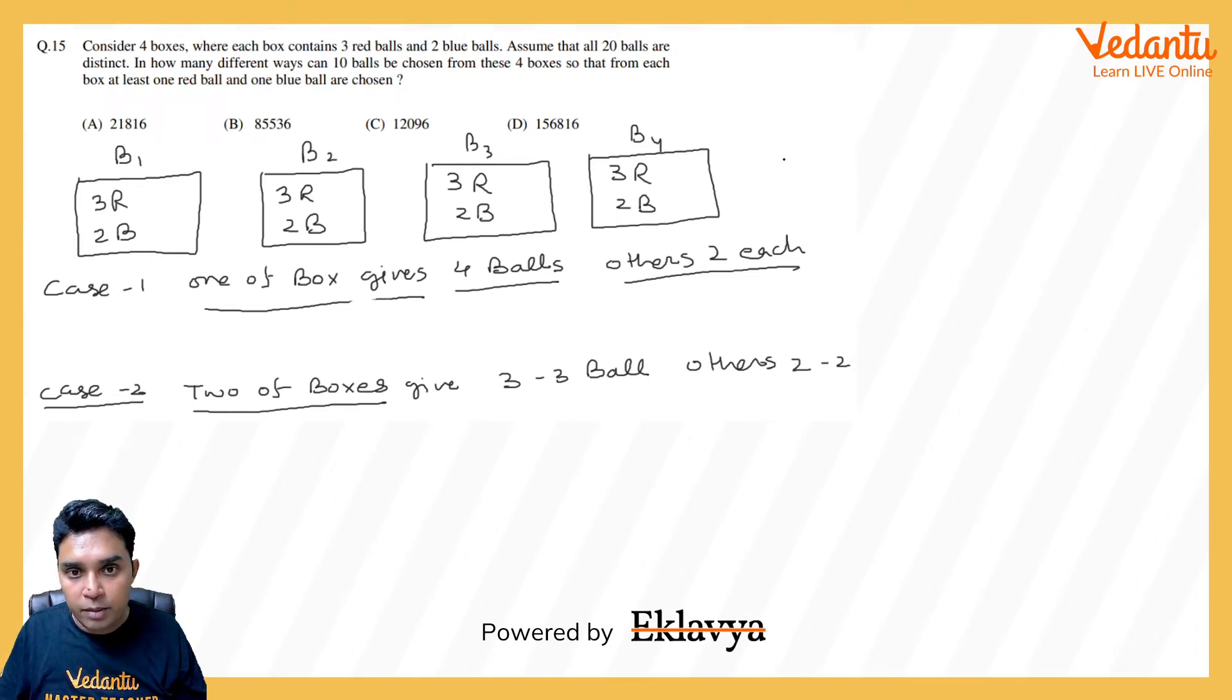Please see how I am doing this question. These are the boxes B1, B2, B3, B4. So as I told you, I need 2 extra balls. So what I will do, I will make first case in which one of the boxes will give me 4 balls instead of 2, and others will give 2 each. Now which one of the boxes, it will be decided in 4C1 ways.